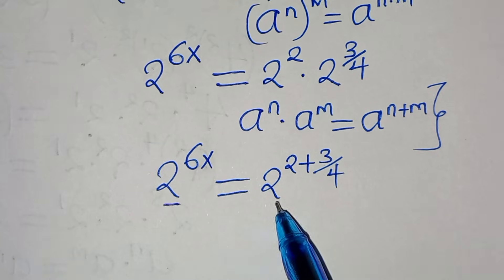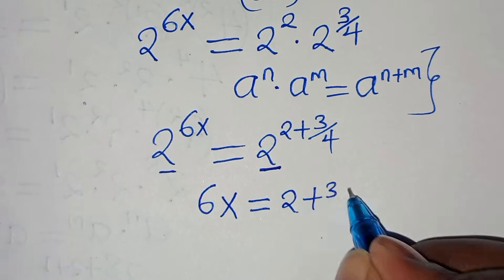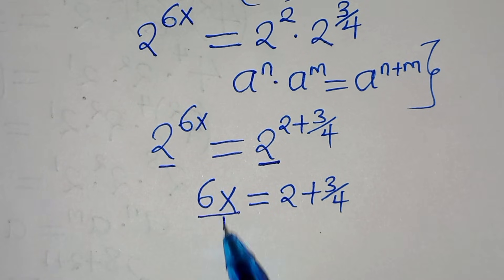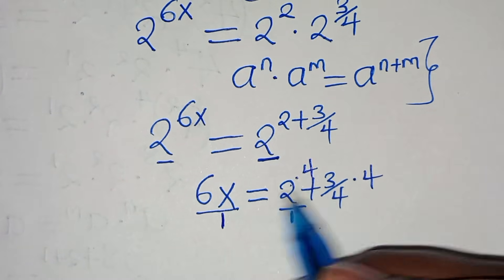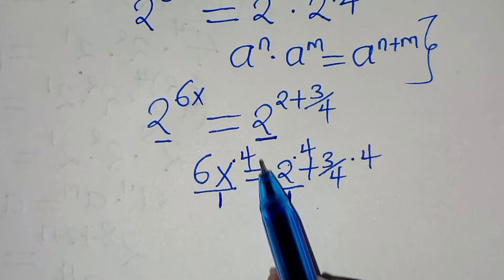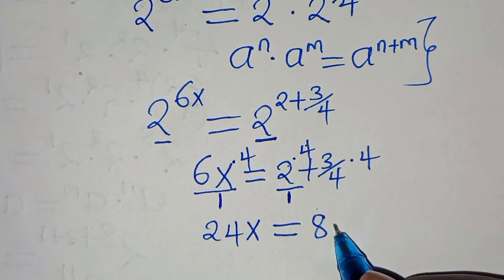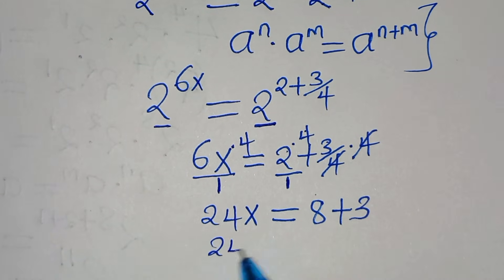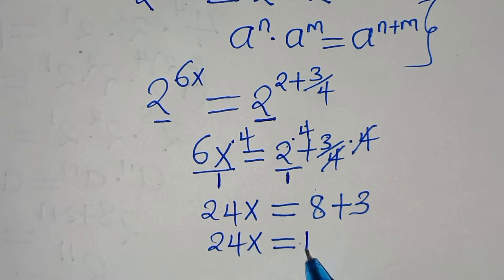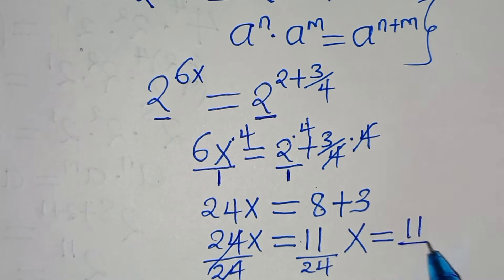Since the bases are common, 6x equals 2 plus 3 over 4. Multiplying everything by the LCM of 4, we get 24x equals 2 times 4, which is 8, plus 3 over 4 times 4, which simplifies to 3. So 24x equals 8 plus 3, which is 11. Dividing both sides by 24, x equals 11 over 24.